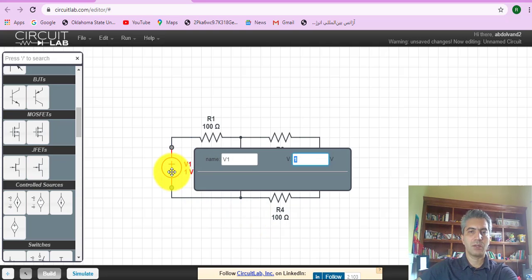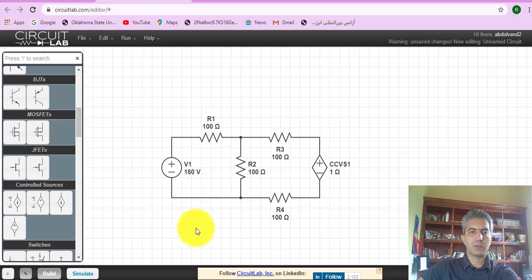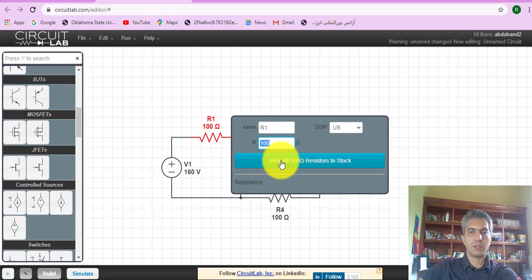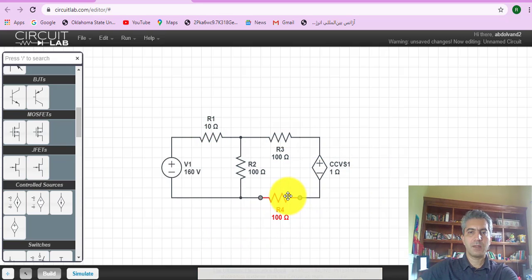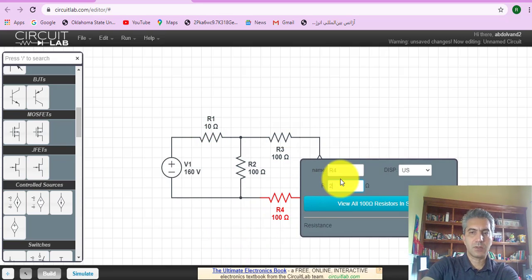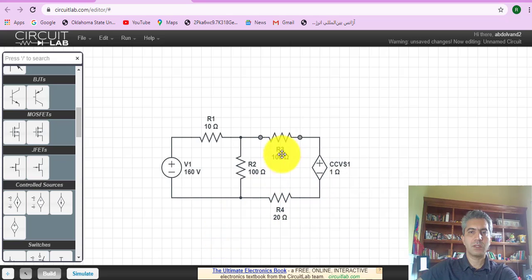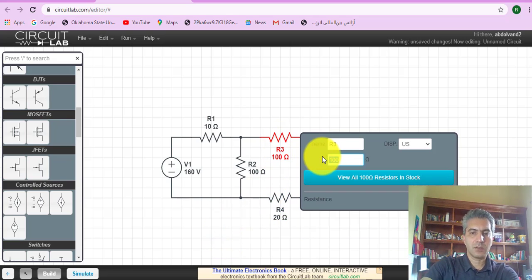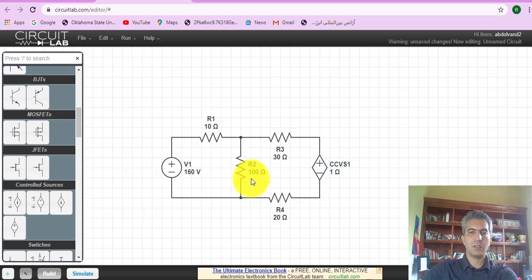Now let's set the values. So double click on this, enter 160 volts for the source. Double click, this is a 10 ohm resistor. Double click, this is a 20 ohm resistor. Double click, this is a 30 ohm resistor, and that's actually 100 ohm.